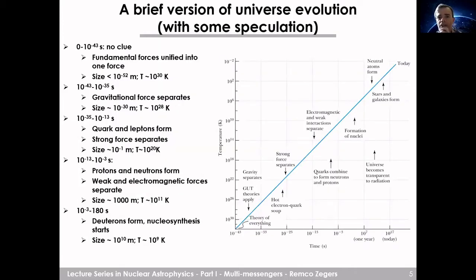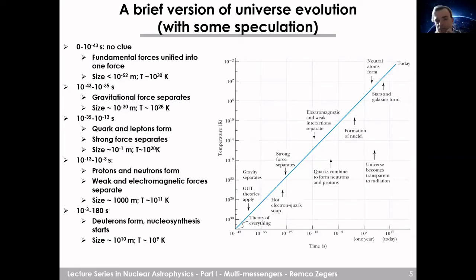Here's a brief two-slide version of the evolution of the universe, with a little bit of speculation since we don't know everything. In the very beginning — from zero to 10 to the minus 43 seconds — we have no understanding of what happened. All the fundamental forces were unified into one force. The universe was smaller than 10 to the minus 52 meters and extremely hot, at 10 to the 30th Kelvin.